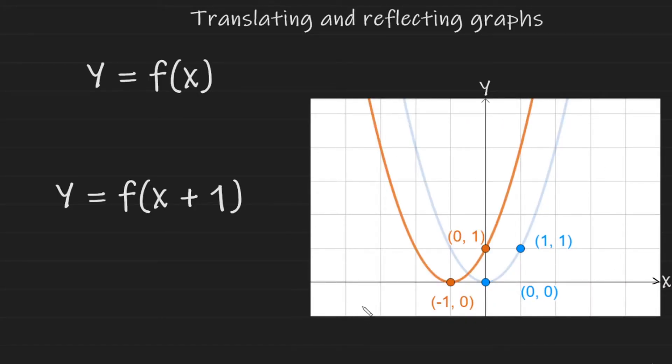Look at the coordinates. This coordinate here that was 1 and 1 has now become 0 and 1. So the x value has actually gone down by 1. And this coordinate here, 0 and 0, again, the x value has gone down by 1.